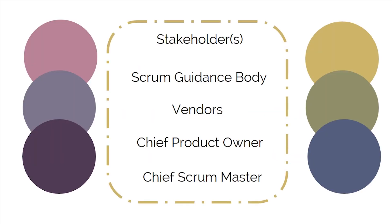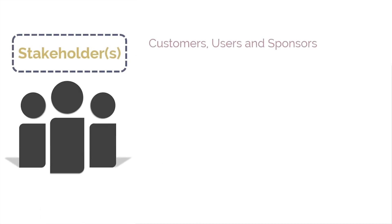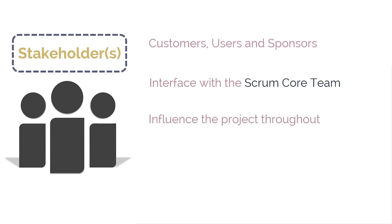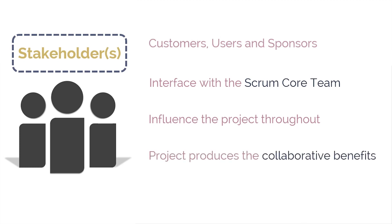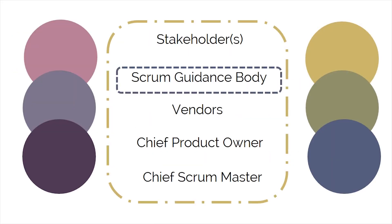Who is involved in non-core roles? Stakeholders, the Scrum guidance body, vendors, the chief product owner, and the chief Scrum master. The first role is stakeholders — a collective term that includes customers, users, and sponsors. They frequently communicate with the Scrum core team and influence the project throughout its development. Most importantly, it is for the stakeholders that the project produces collaborative benefits.